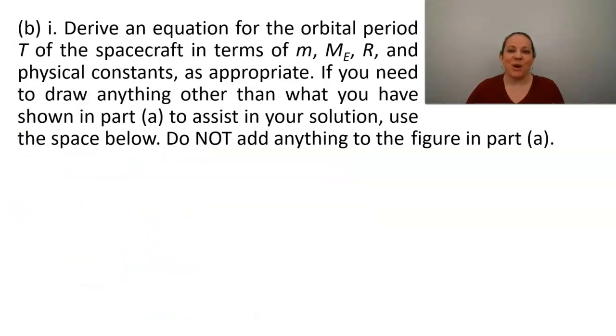And in part B1, we're going to derive an equation for the orbital period T of the spacecraft in terms of M, ME, R, and physical constants as appropriate. If you need to draw anything other than what you have shown in part A to assist in your solution, use the space below. Do not add anything to the figure in part A. That's also a very common warning when you have drawn a free body diagram in one part of the question.